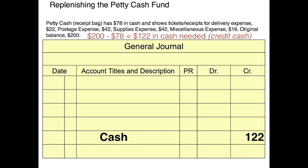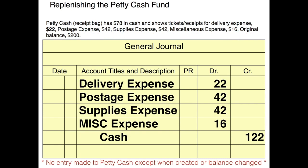Now I just list all those expenses and record them in my books: delivery expense, postage, supplies, and miscellaneous. In this case we're happy because they all add up to $122, so everything seems to be fine.